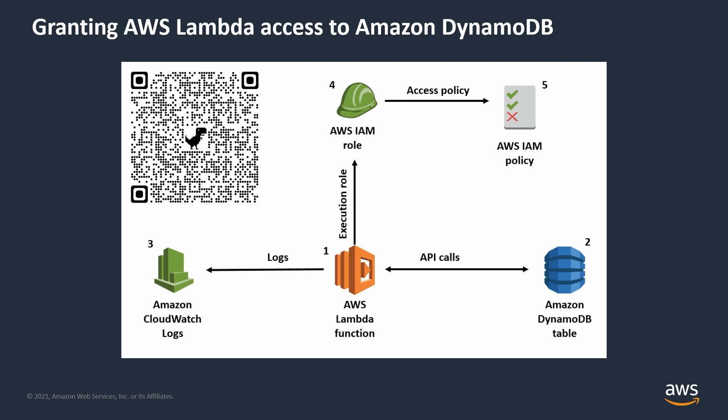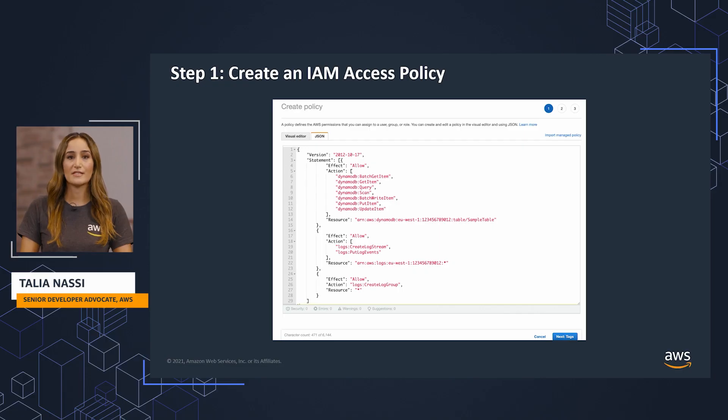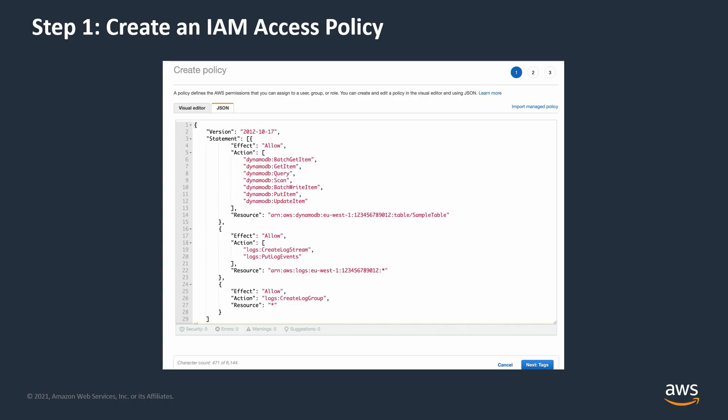If you'd like to follow along with this tutorial, use this QR code for all the data you need to enter into the console. The first step to grant Lambda access to DynamoDB is to create an IAM access policy with JSON. You can do this in IAM with the AWS console or in SAM, the Serverless Application Model. I will attach this policy to a role, and this role will then be attached to a Lambda function which will assume the required access to DynamoDB and CloudWatch logs.